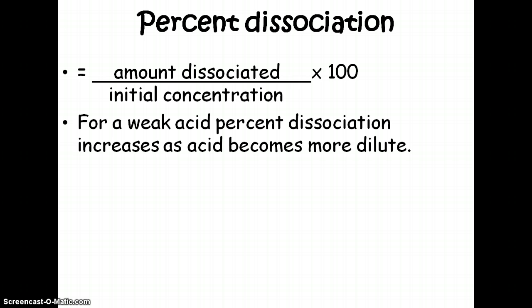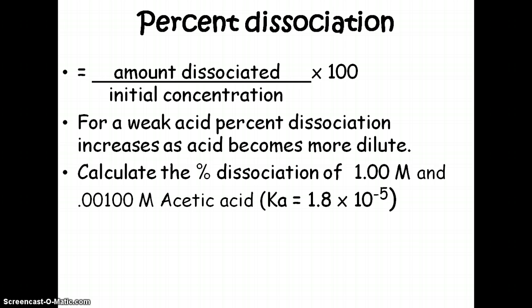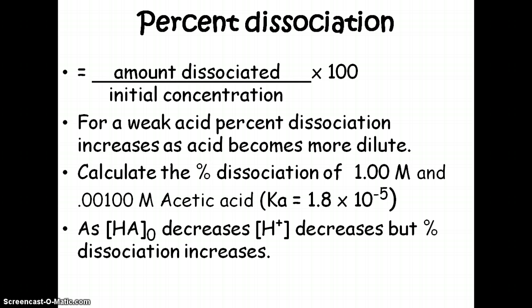For a weak acid, the percent dissociation will increase as the acid becomes more dilute. That might sound weird. We're going to look at this by calculating the percent dissociation of 1 molar and then 0.001 molar acetic acid, which has a Ka of 1.8 times 10 to the negative 5th. We should see that as the initial concentration decreases, the H+ concentration decreases, but the percent dissociation will increase — and this is all going to be due to Le Chatelier's principle.